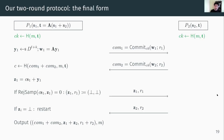Let's look at the final form of our two-round protocol. The commitment key is first generated depending on the message. Then both parties exchange commitments com1 and com2, and then perform rejection sampling. If successful, they open the commitment and send the response; otherwise they restart. This concludes the protocol.